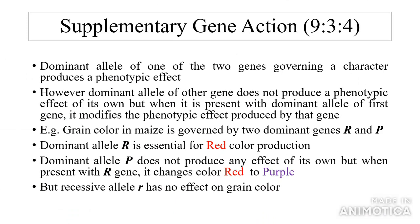Supplementary gene action: 9:3:4. The dominant allele of one of the two genes governing a character produces a phenotypic effect; however, the dominant allele of the other gene doesn't produce a phenotypic effect of its own, but when present with the dominant allele of the first gene, it modifies that phenotypic effect. Example: grain color in maize is governed by two dominant genes R and P. Dominant allele R is essential for red color production; dominant allele P doesn't produce any effect of its own, but when present with R, it changes the color from red to purple. Recessive allele r has no effect on grain color.